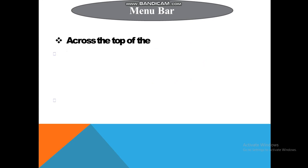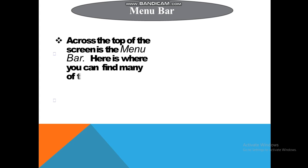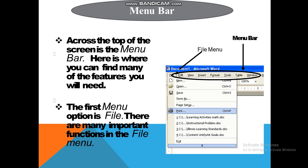What is the menu bar? Across the top of the screen is the menu bar. Here is where you can find many of the features you will need. The first menu option is File, and there are many important functions in the File menu. The menu bar is the topmost part of the screen — this is the topmost positioning of these icons.